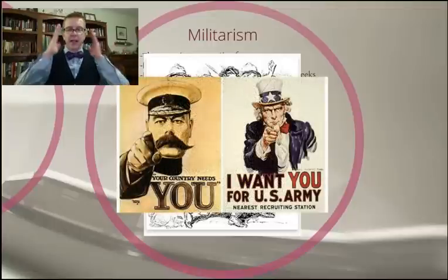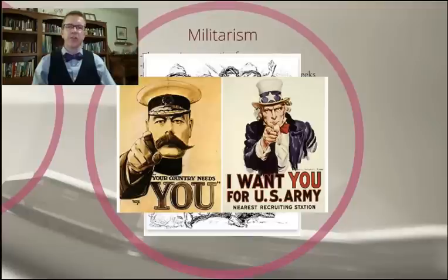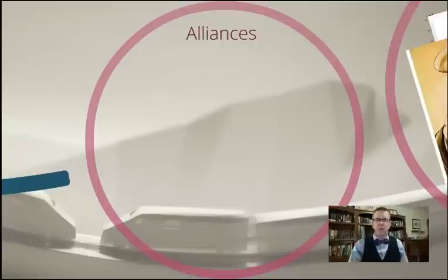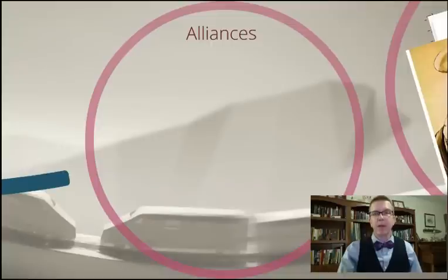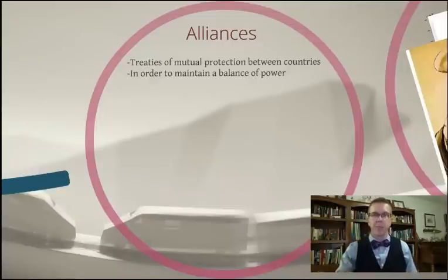This leads to iconic symbols of nationalism used to advance militarism. We have Uncle Sam here wanting you for the U.S. Army — that's you, even you in the back. And the British equivalent, Lord Kitchener, wanting you to serve your country as well, if you happen to be British. Then with all this militarism, if you're a smaller country it's like being the small guy when the big bully wants to pick on you — what do you do? You get some friends. And so these are treaties of mutual protection between countries in order to maintain a balance of power.